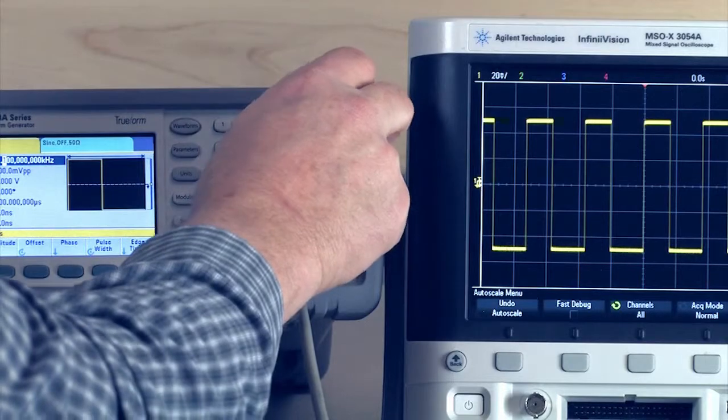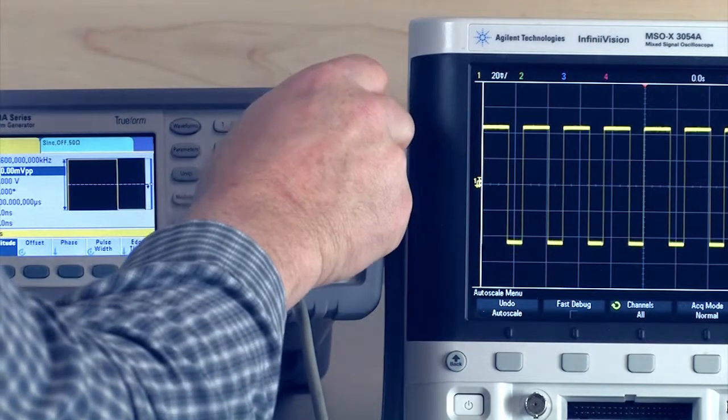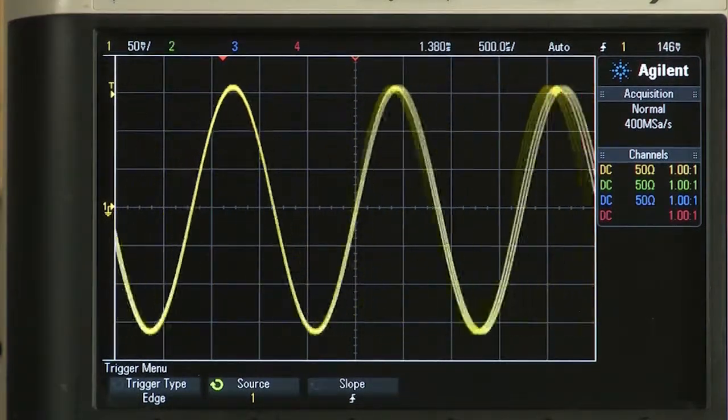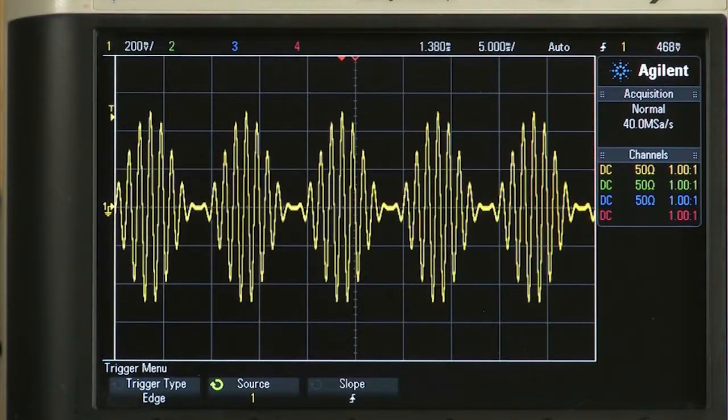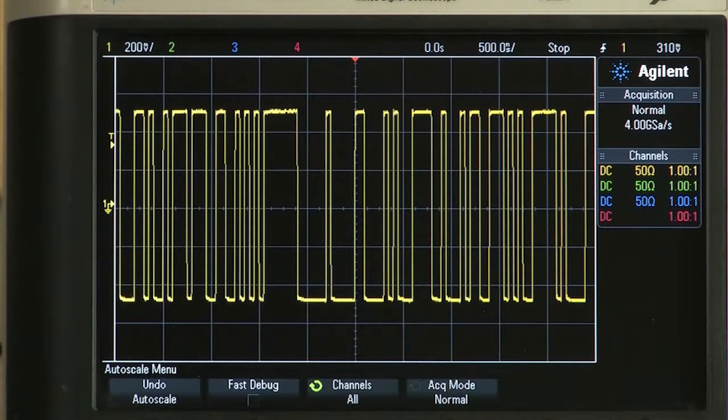The large color display makes it easy to set up and adjust waveform types, parameters, and modulation. In addition to burst and sweep, you get a full complement of modulation capabilities, including amplitude modulation, pulse width modulation, and pseudo-random binary sequences.